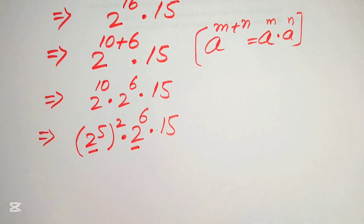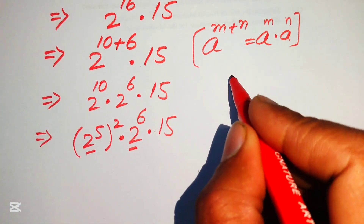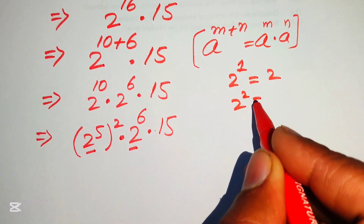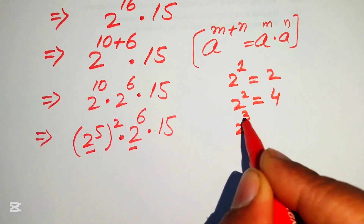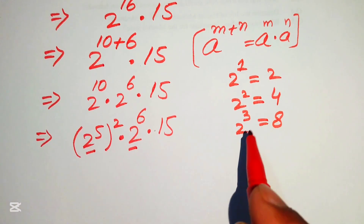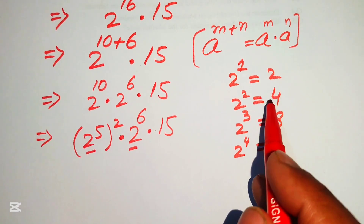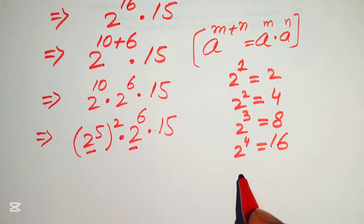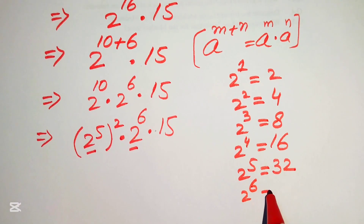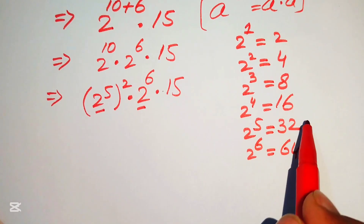To find the values of 2 to the power of 5 and 2 to the power of 6, we build up: 2^1=2, 2^2=4, 2^3=8, 2^4=16, 2^5=32, and 2^6=64. Each next term is the previous term multiplied by 2.